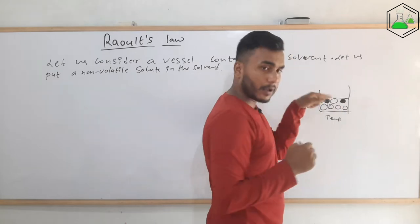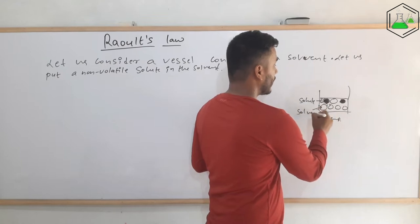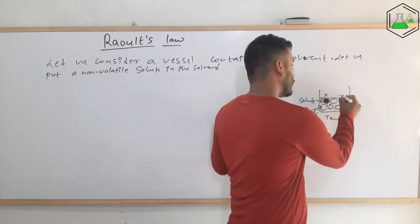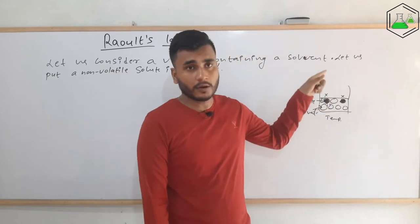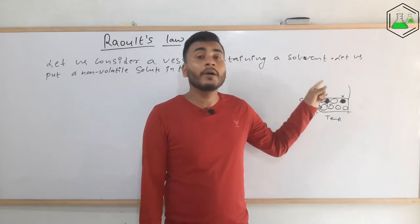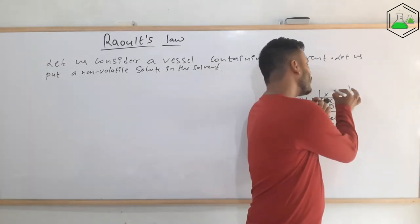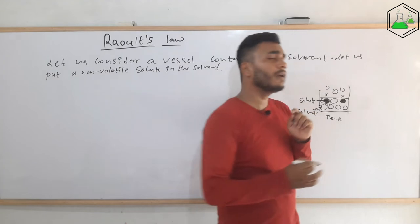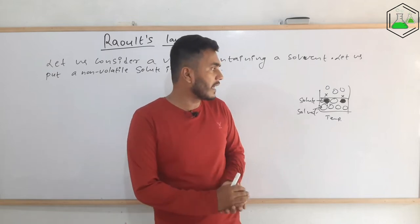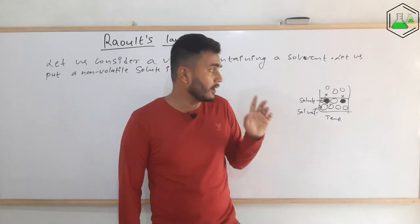The black circles are the solute and the white circles are the solvent. The solute will try to block all the particles below it and will not allow them to go up, not allow them to escape from the surface and form vapor. Obviously the particles have to escape from the surface to form vapor, and in this case there won't be any formation of vapor from this blocked region. Very few particles will escape from the surface and form vapor.